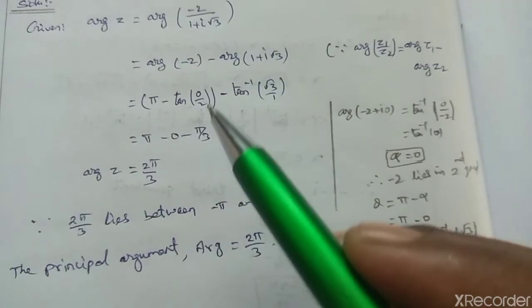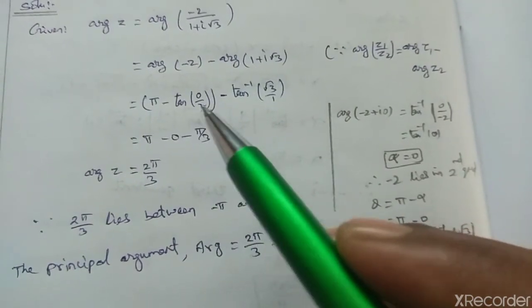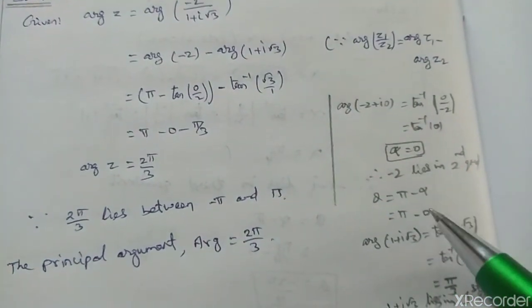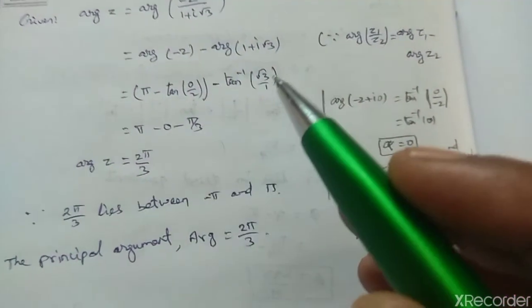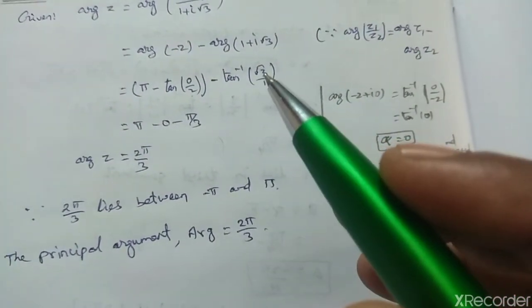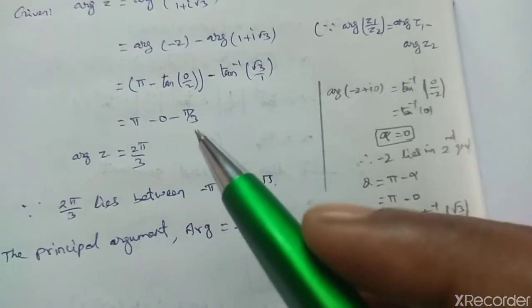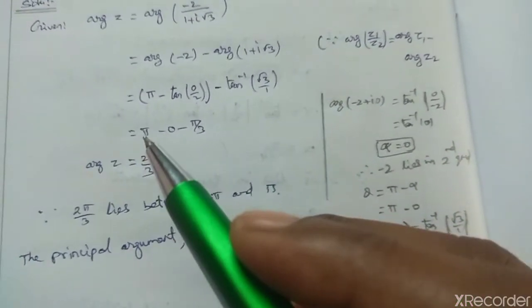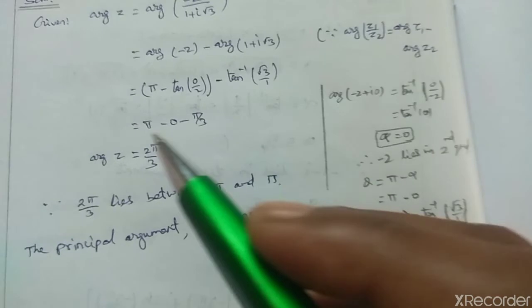Pi minus 0 minus tan inverse of root 3 value is pi by 3. Pi minus pi by 3 equals 2 pi by 3.